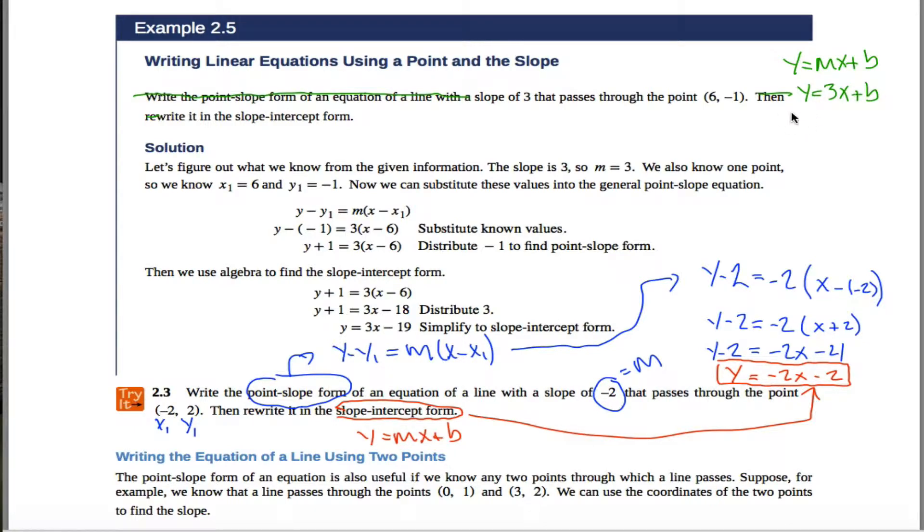You can figure out b from this equation by taking these points and plugging them in for x and y respectively. The idea here is this equation has to be true for any point on the line. So if I let this be the x-coordinate and this be the y-coordinate, I can say negative 1 equals 3 times 6 plus b. In other words, negative 1 must equal 18 plus b. From this you can figure out what b must be. Subtract 18 from both sides of the equation, and you get that b equals negative 19.